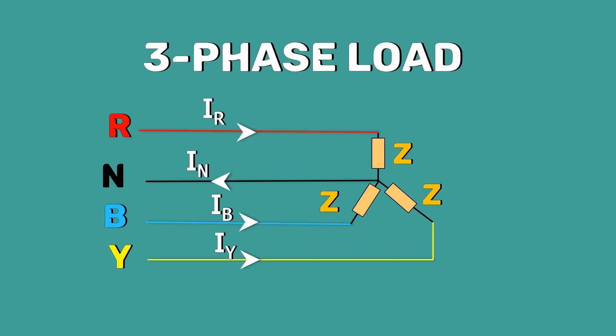We know that the sum of these line currents is equal to the current in the neutral wire. Since in a balanced system, the sum of the line currents at all instants is zero, the neutral current is zero. This means in a balanced system, the neutral wire will not carry any current.